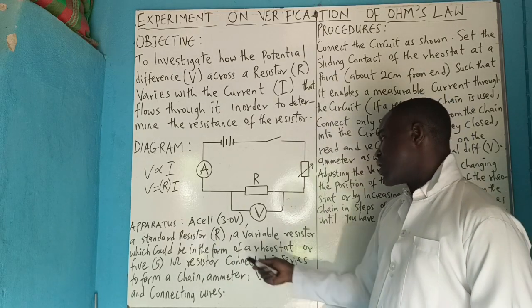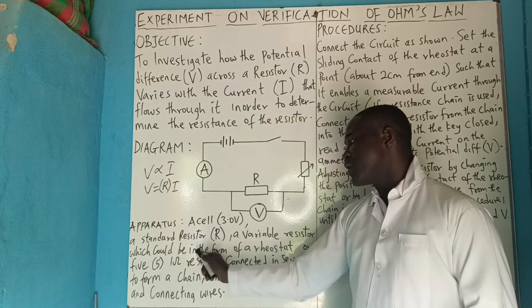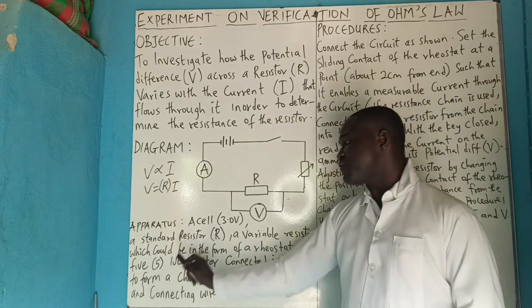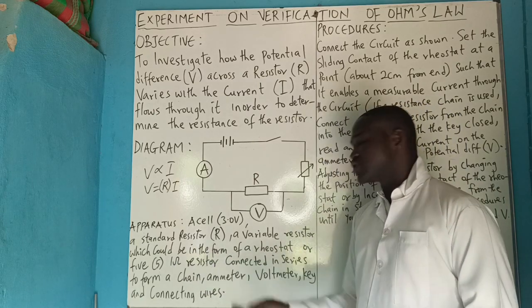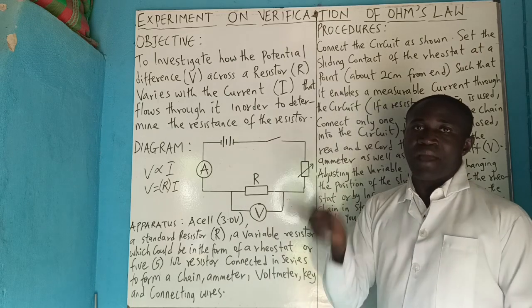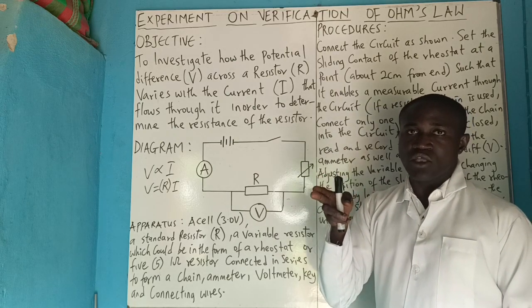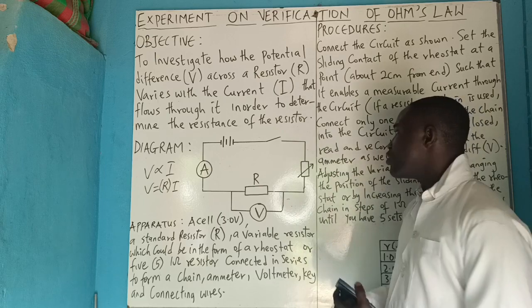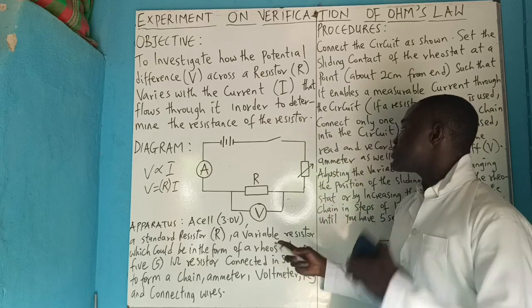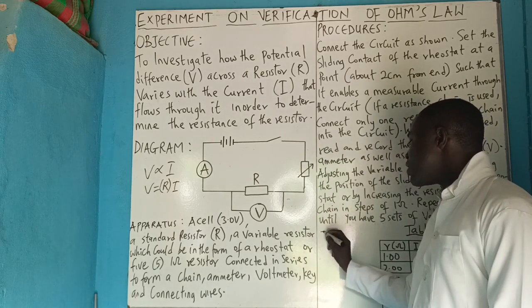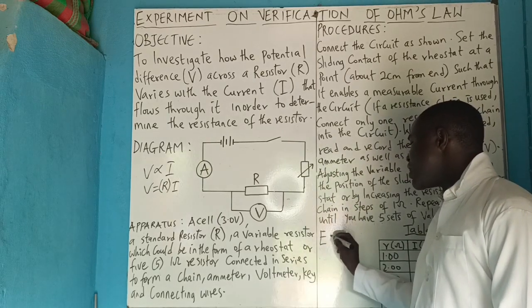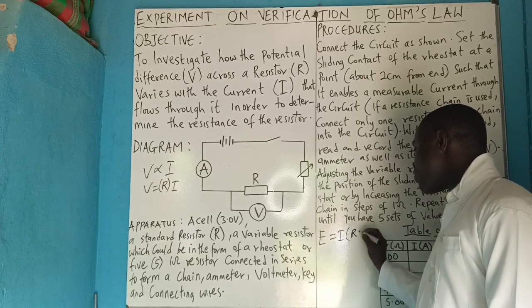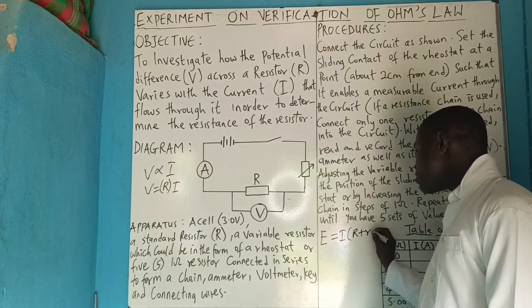We can use a variable resistor, which could be in the form of a rheostat. Or we use five 1-ohm resistors one by one: add one, then two, then three, then four. That means we will be using the formula E equals I bracket R plus r.